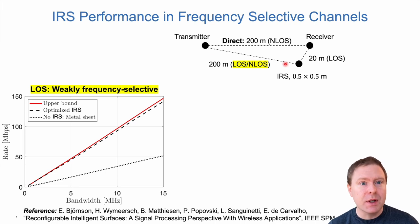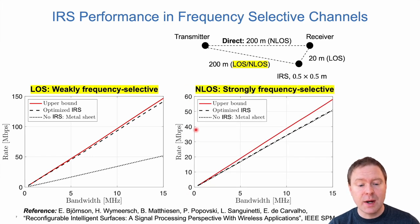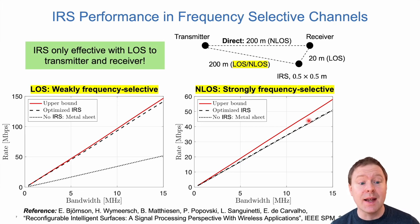But if we keep everything fixed except that we now block the line of sight path between the transmitter and IRS, we instead get this result. You can see that the vertical range is much smaller because we get smaller numbers when the line of sight path is taken away. The upper bound is down here, and the optimized IRS case where we need to be optimizing it only one configuration, not on the per subcarrier basis, is very close to the metal sheet. That is because now the channel is varying so rapidly over the frequency domain that we can only adapt IRS to one of the subcarriers. For the other ones there will be fluctuations and eventually it will not be much better than the metal sheet. So the conclusion here is an IRS is only effective when you have line of sight to the transmitter and to the receiver from the IRS point.